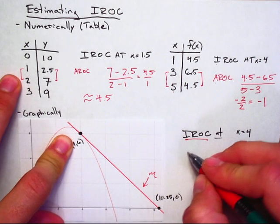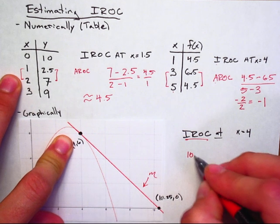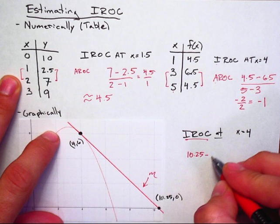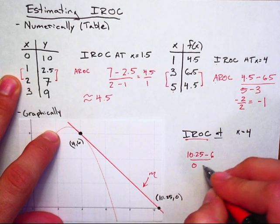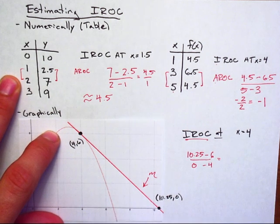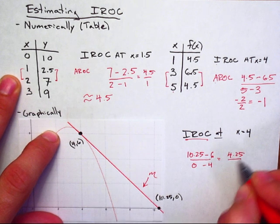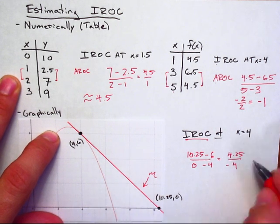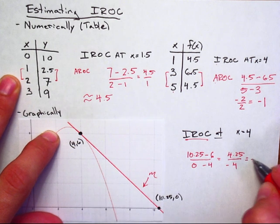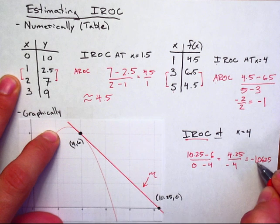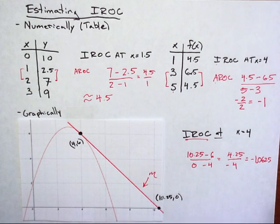So we have 10.25 minus 6, all over 0 minus 4. And so what that is going to get you is equal to 4.25 divided by negative 4. And when that gets divided out, negative 1.0625. So that is now our estimate to the instantaneous rate of change.